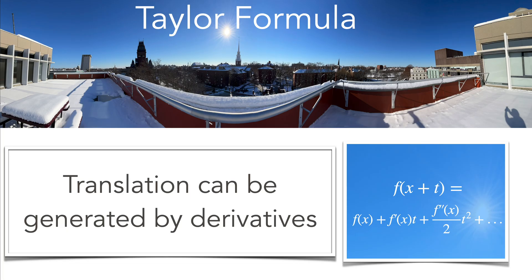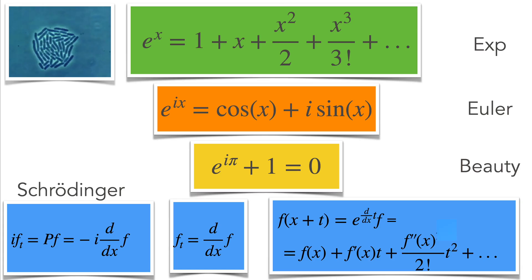Taylor's formula tells that translation is generated by derivatives. We can express the function if we know all the derivatives at the point. Here we see it for the exponential function, which evaluated at imaginary x becomes trig functions, and so the most beautiful formula in mathematics.